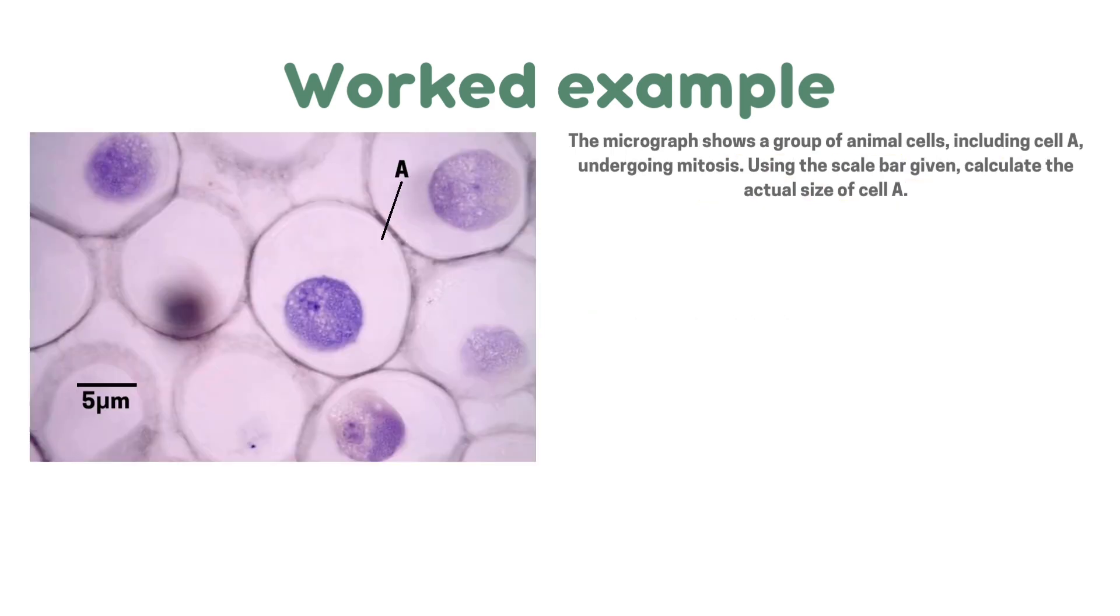Now we're going to go through our next worked example. The micrograph shows a group of animal cells including cell A undergoing mitosis. Using the scale bar given, calculate the actual size of cell A. As you can see there's a scale bar. This is a different sort of microscopes calculation question that you will come across in your exams or in your mocks or in practice questions. First of all, we're going to highlight the keywords which are scale bar, the actual size and cell A.